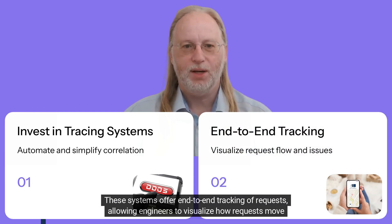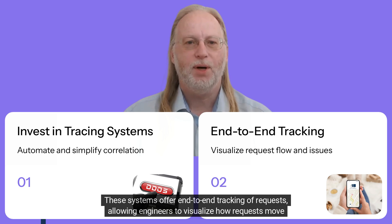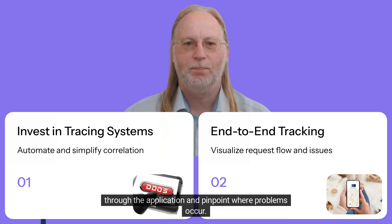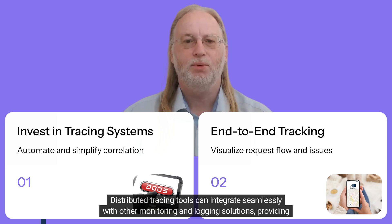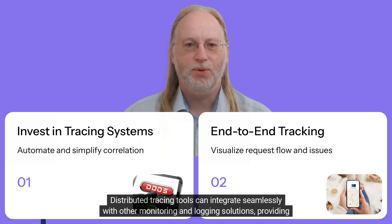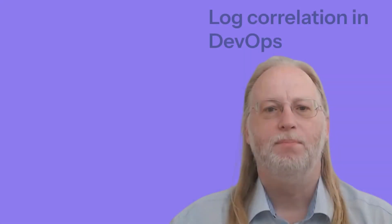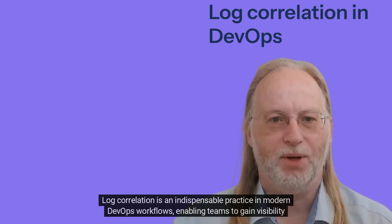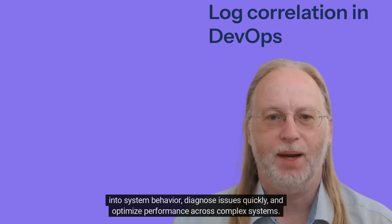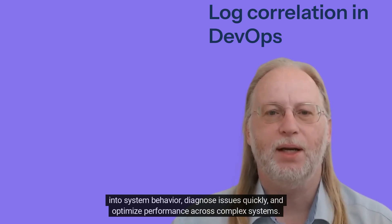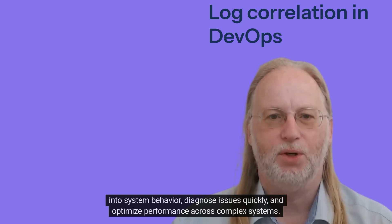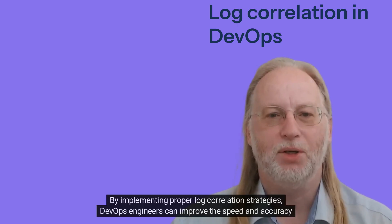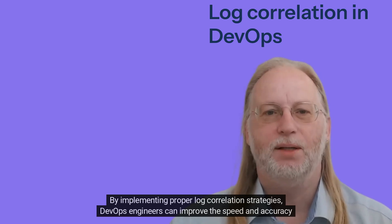Finally, investing in distributed tracing systems is key to automating and simplifying the correlation process. These systems offer end-to-end tracking of requests, allowing engineers to visualize how requests move through the application and pinpoint where problems occur. Distributed tracing tools can integrate seamlessly with other monitoring and logging solutions, providing a complete picture of system health.